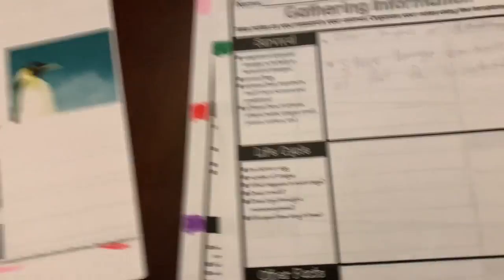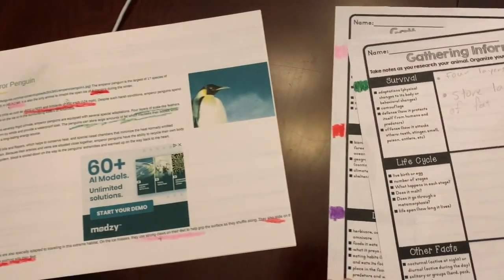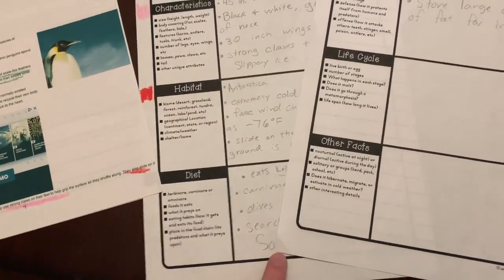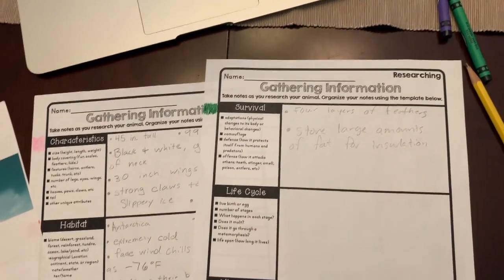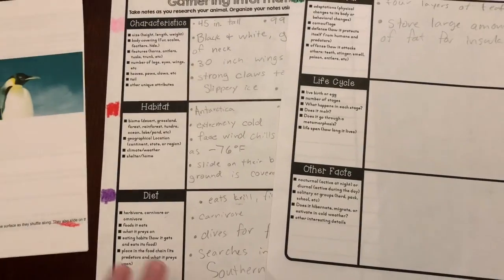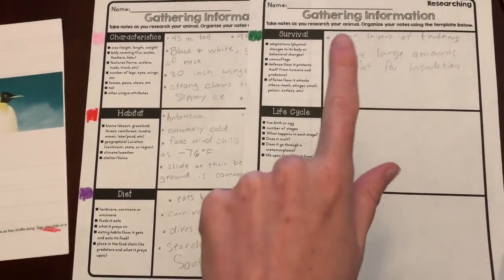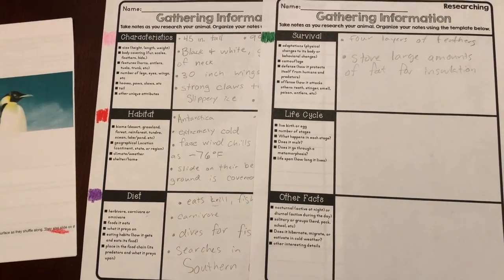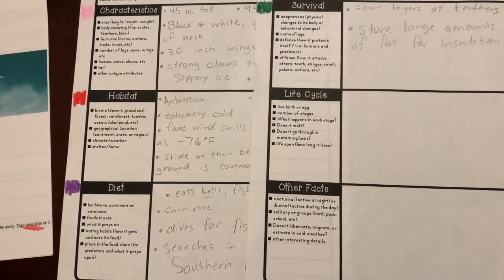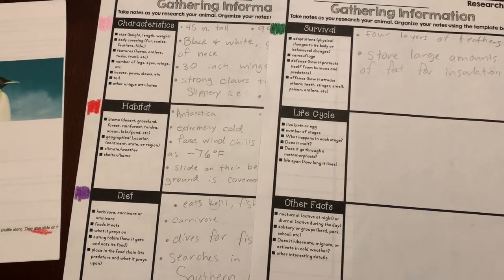If I wanted to keep reading my resource, I definitely could and would probably find more information. But for me, I have four notes about diet and two notes about survival — I am good to go. As you're taking your notes today, remember to make sure you have at least four between these two categories. If you have a hard time reading something, don't be afraid to ask an adult or an older sibling. Let me know if you have any questions — you're doing a great job, dolphins!